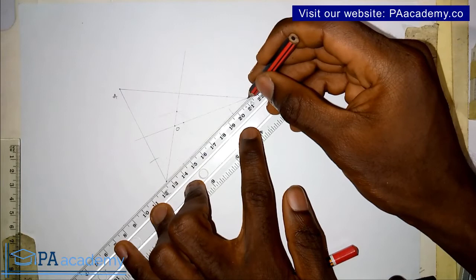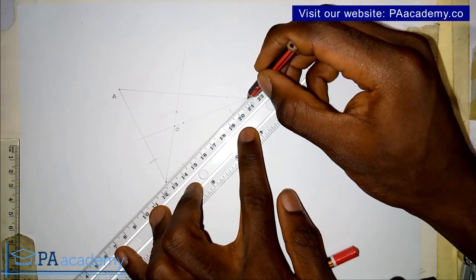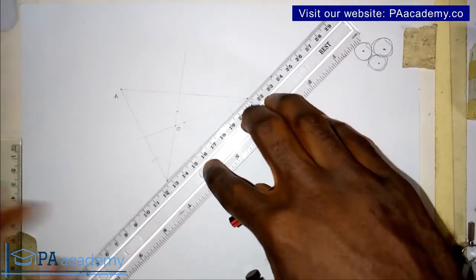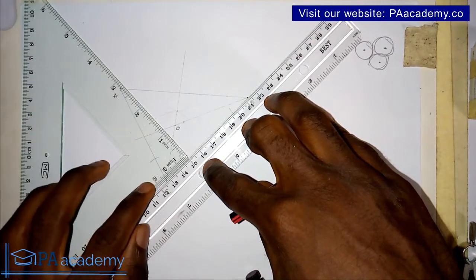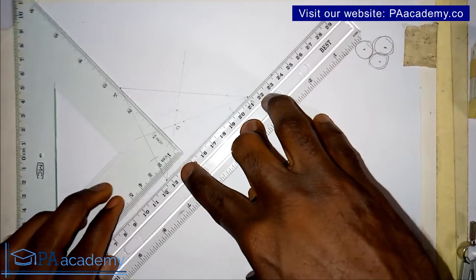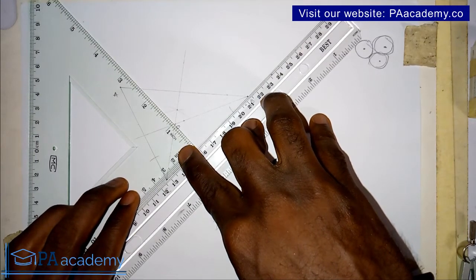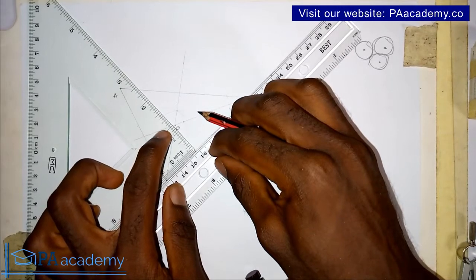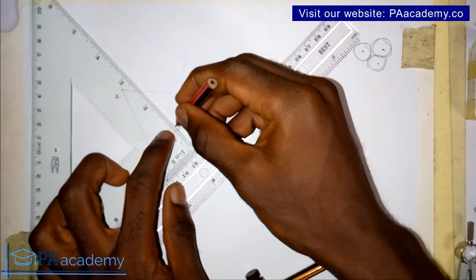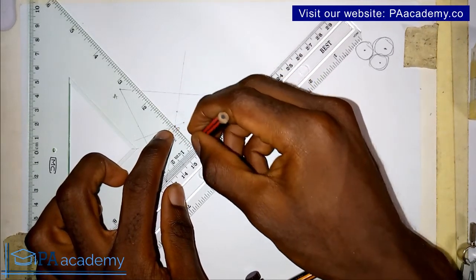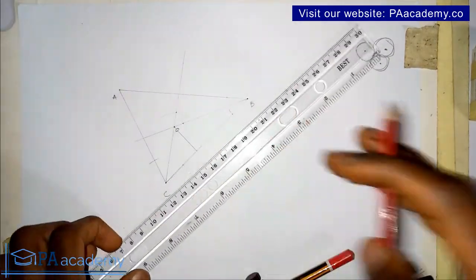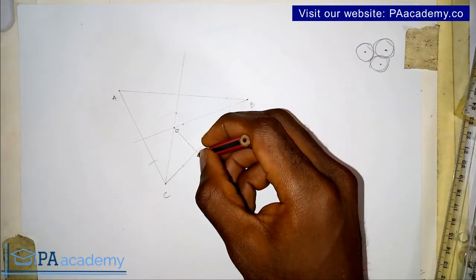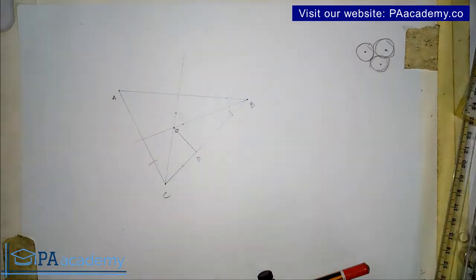I want to get this line straight on my ruler so that I can introduce my set square. My set square is resting on the ruler and I'll adjust it until it reaches point O. Now that is the perpendicular line. Let me call the point where this perpendicular meets line CB — let me call it point D.